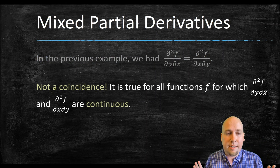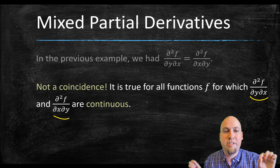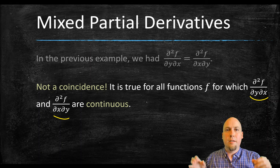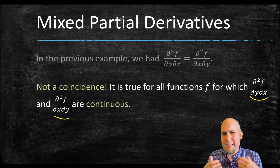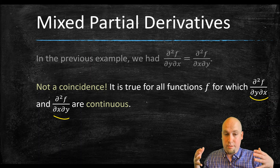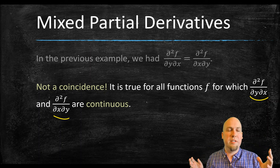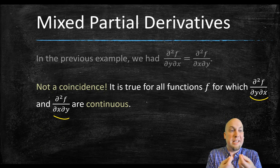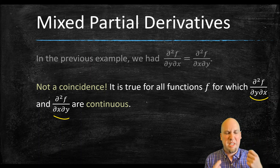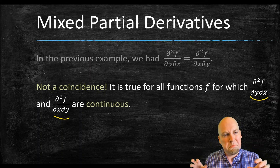One thing to notice is that the two mixed partials are equal: whether we differentiated x then y, or y then x, we got cos x both times. This is not a coincidence — it's a result called Clairaut's Theorem, which states that for any function whose mixed second partial derivatives are continuous, the mixed partials must be equal. So even though there are technically four second partial derivatives, you only need to compute three — you get the fourth for free. For any function we encounter in this course this will hold. An analogous fact applies to higher-order derivatives: mixed partials are equal as long as you differentiate with respect to each variable the same number of times, regardless of order.